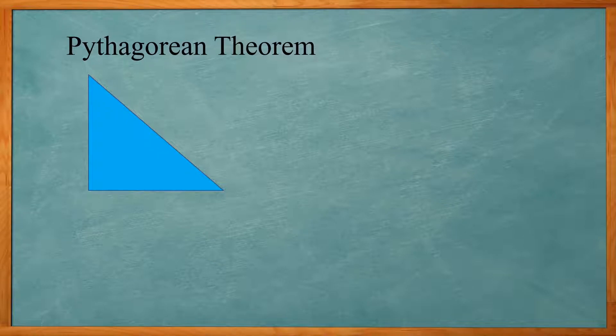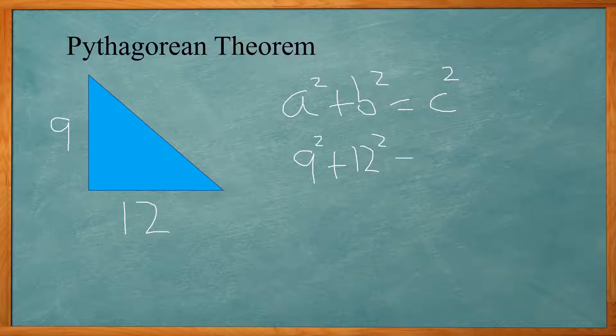Let's take a look at one example. We have a triangle that has legs of 9 and 12, and we need to find the hypotenuse. We need to use the Pythagorean theorem a squared plus b squared equals c squared. We'll replace the letters that we know and solve for the unknown. We got 9 squared plus 12 squared equals c squared.